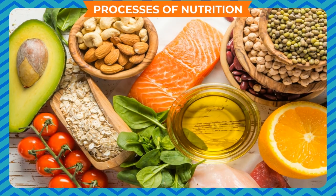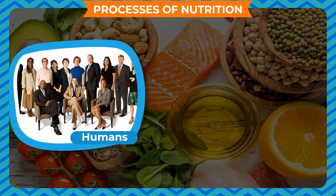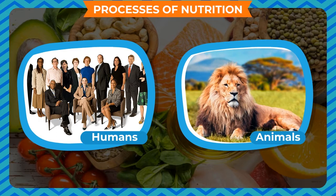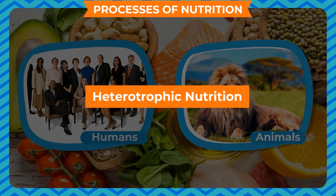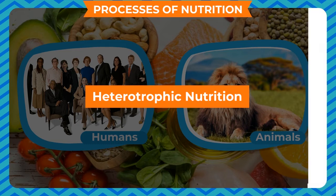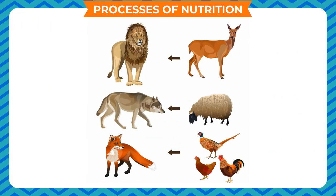Processes of Nutrition: Human beings and animals do not make their own food. They depend on plants and other animals for food. This type of nutrition is called heterotrophic nutrition. Though the process of taking in food varies from animal to animal, the nutrition process is necessary to be completed. Various steps are involved in this process.